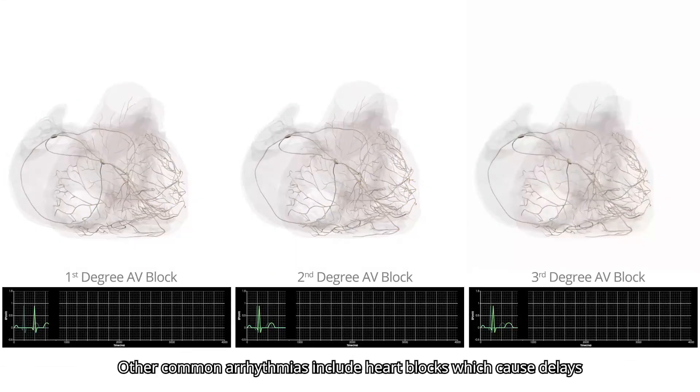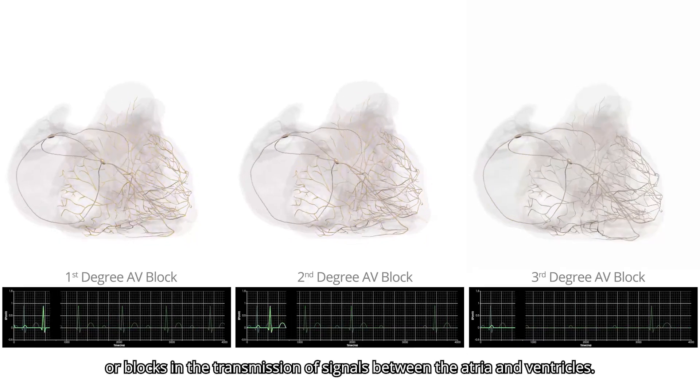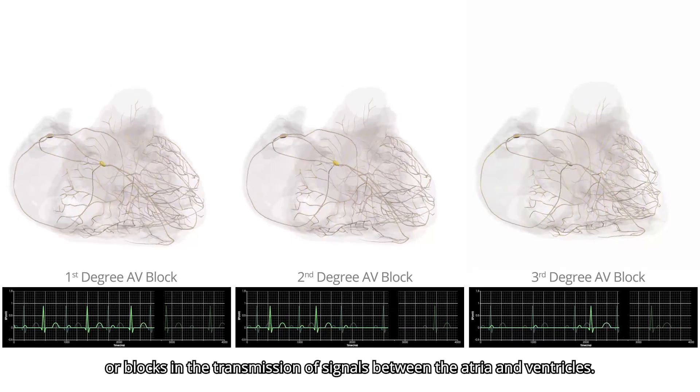Other common arrhythmias include heart blocks, which cause delays or blocks in the transmission of signals between the atria and the ventricles.